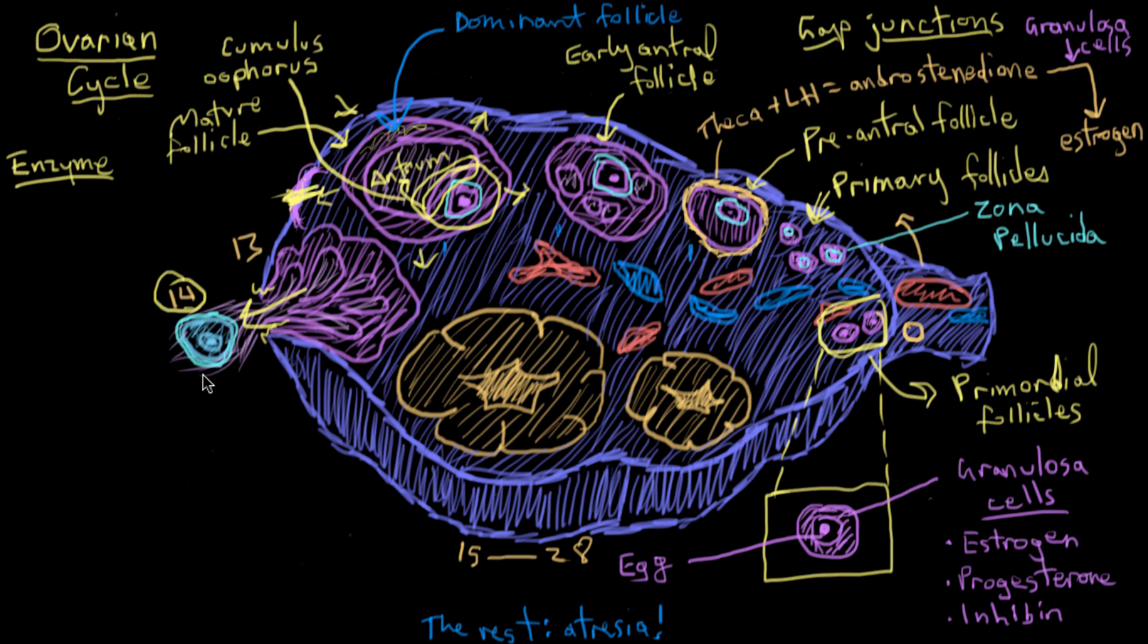And actually, sometimes by chance, two or more follicles reach maturity and they all pop out. And that's how you get twins or triplets or quadruplets or octuplets when they all pop out and get fertilized by different sperm each because they're all subsequently swept up into the uterine tubes where sperm can fertilize them.